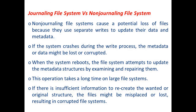There are two types of file systems: journaling and non-journaling. Non-journaling file systems cause a potential loss of files because they use separate writes to update their data and metadata. If a system crashes during the write process, the metadata or data might be lost or corrupted. When the system reboots, the file system attempts to update metadata structures by examining and repairing them — an operation that may take a long time on large file systems.